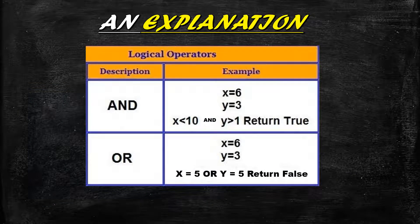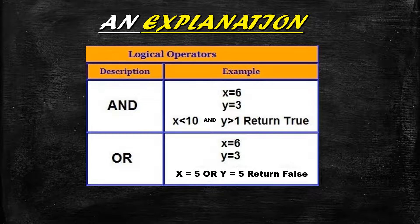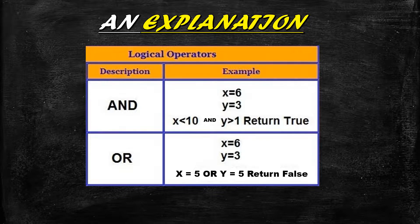As an example of logical operators, given x = 6 and y = 3: the expression x < 10 AND y > 1 returns true, because both expressions are true — x is less than 10 and y is greater than 1. For the OR example, x = 5 OR y = 5 — both are false since x is 6 and y is 3, so it returns false.